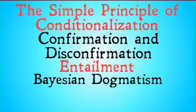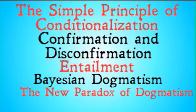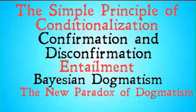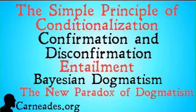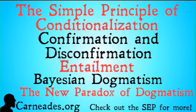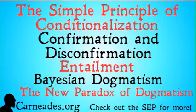So that was entailment in Bayesian epistemology. Next up, we're talking about Bayesian dogmatism and then the new paradox of dogmatism, which hopefully you've gotten a little hint at already. Watch this video and more at Carnades.org, and check out the SEP for more information on Bayesian epistemology — all of the information in this series comes straight from the SEP.